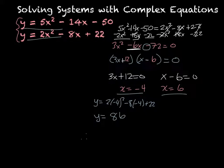So that means, therefore, the point negative 4, 86 is an intersection.